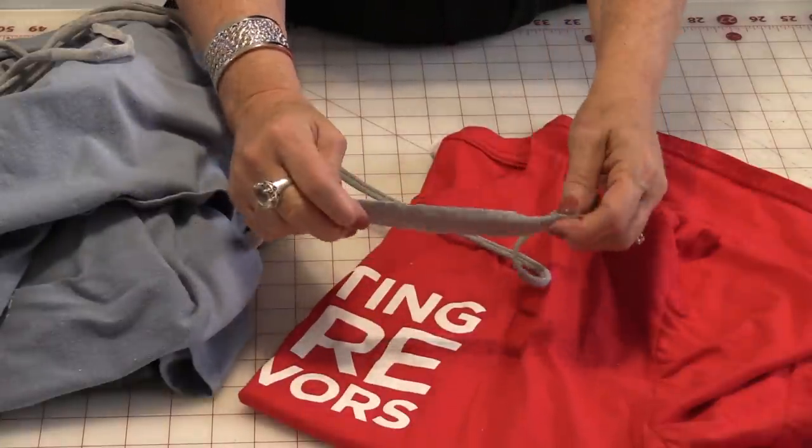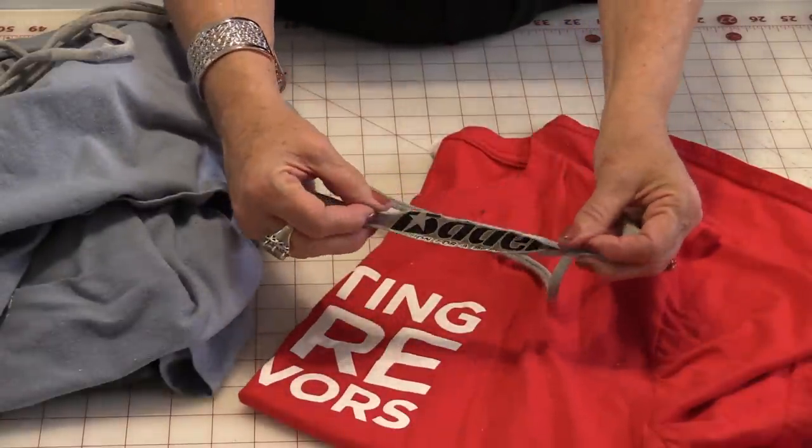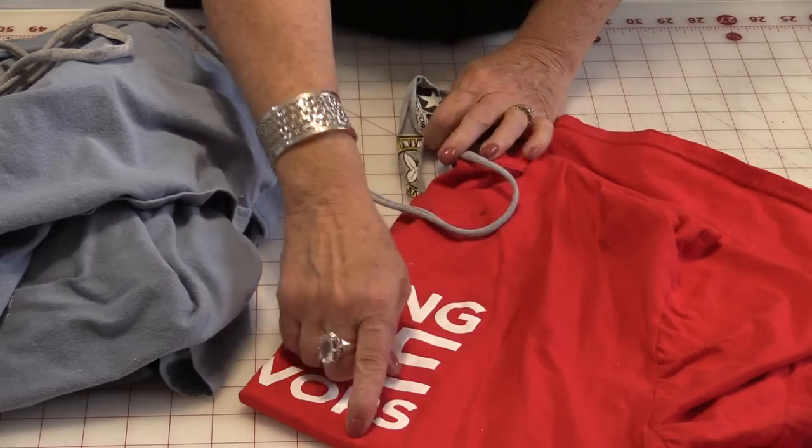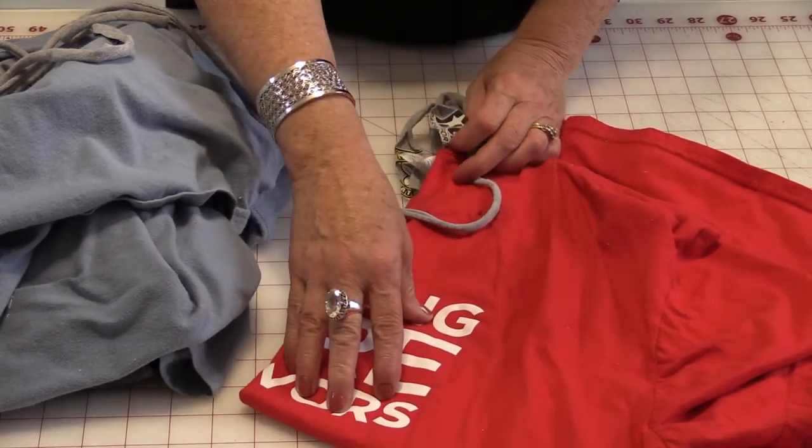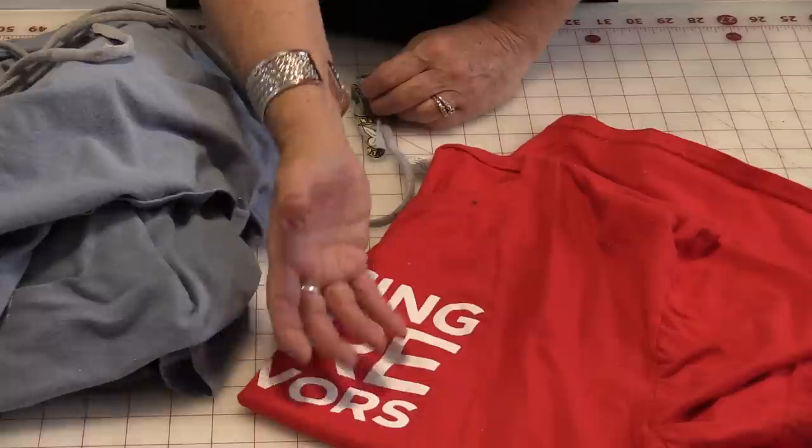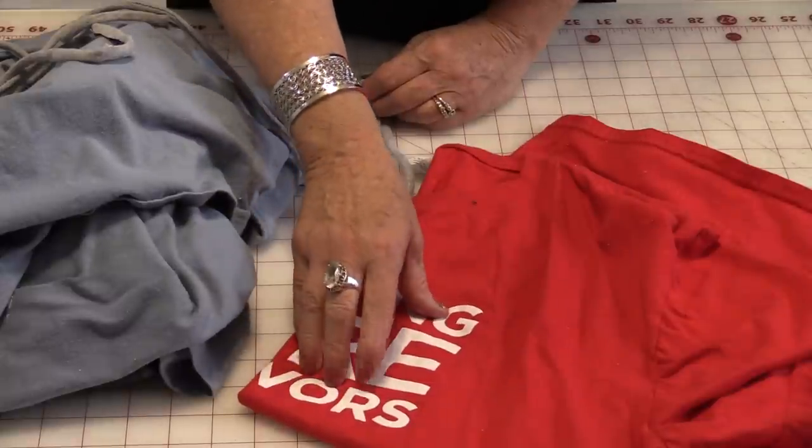that paint on the t-shirt will prevent it from curling into a yarn. So you will not be able to use a section that has the print on it, which is fine because you can always save this part for the quilt.